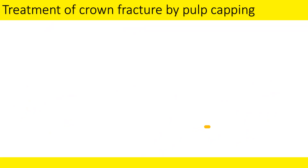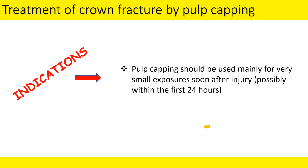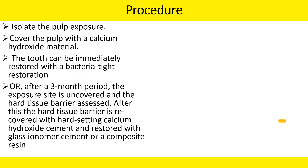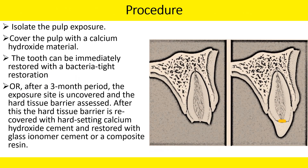Regarding treatment of crown fracture by pulp capping, the indications are a very small exposure soon after the injury, possibly within the first 24 hours. The procedure is straightforward: you isolate the pulp exposure, place a layer of calcium hydroxide on it, restore it with a bacteriatight seal, and send the patient back.